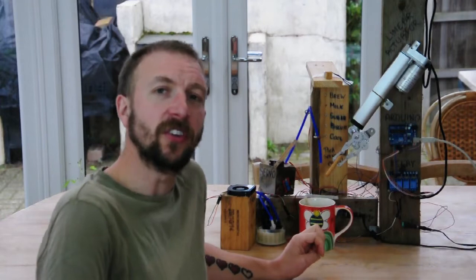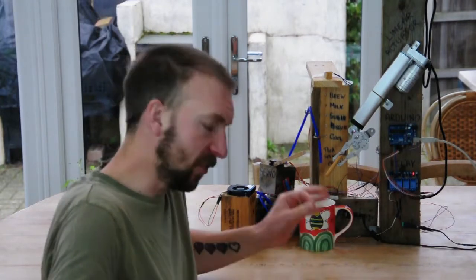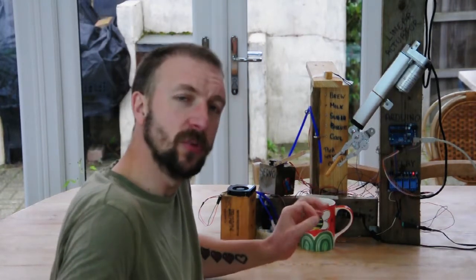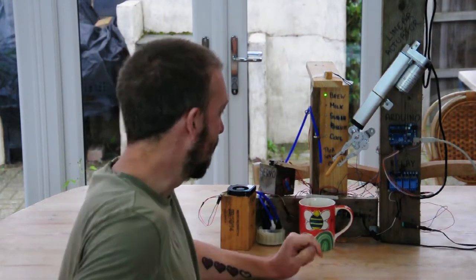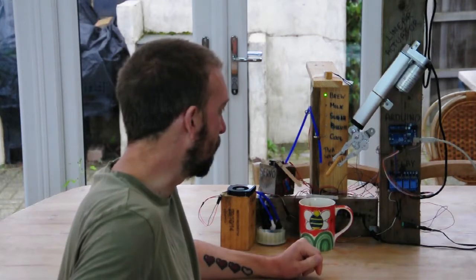Now, obviously the first step in any tea making process is to dunk the tea bag into the water the optimum number of times just to get that right strength of tea on. And here we go. So this is the first step in the process.